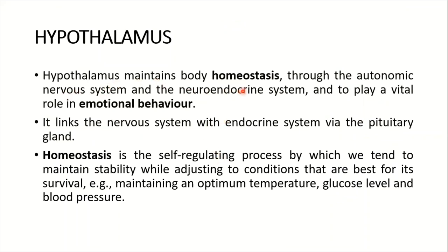The hypothalamus maintains body homeostasis through the autonomic nervous system and the neuroendocrine system, and plays a vital role in emotional behavior. It links the nervous system with the endocrine system via the pituitary gland. Homeostasis is a self-regulating process by which we tend to maintain stability while adjusting to conditions best for survival - for example, maintaining optimum temperature, glucose level, and blood pressure - through all three systems subserved by the hypothalamus.